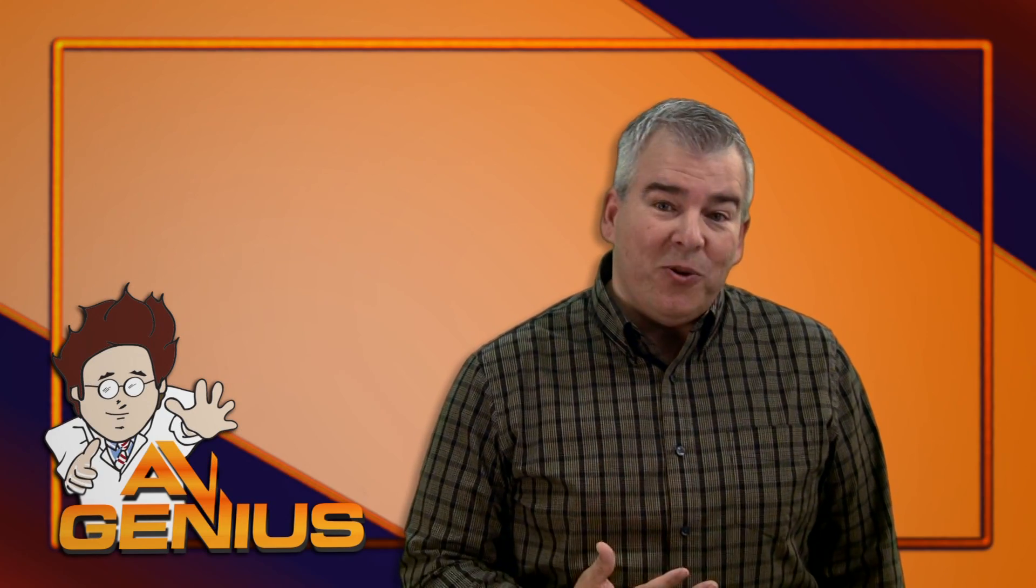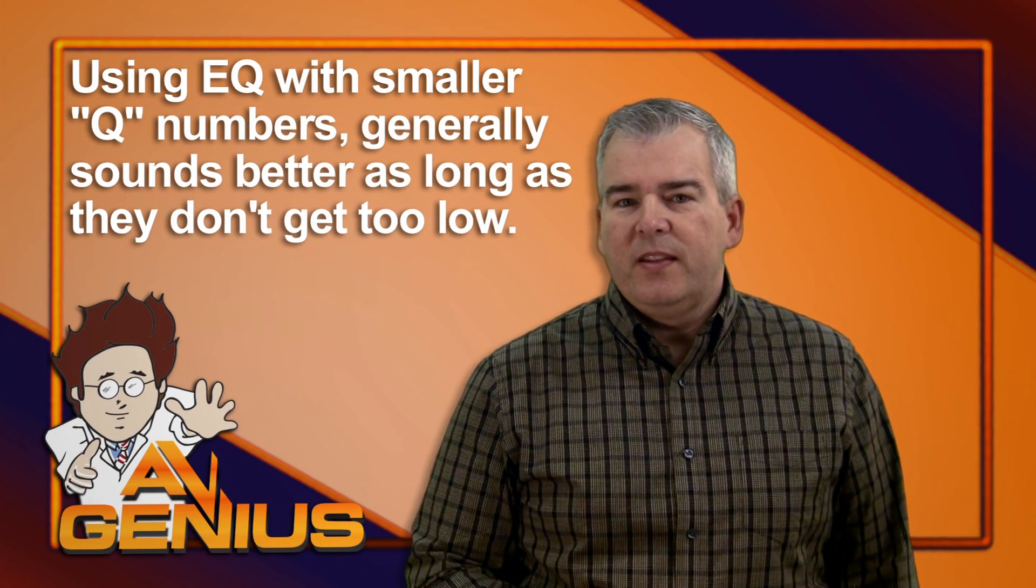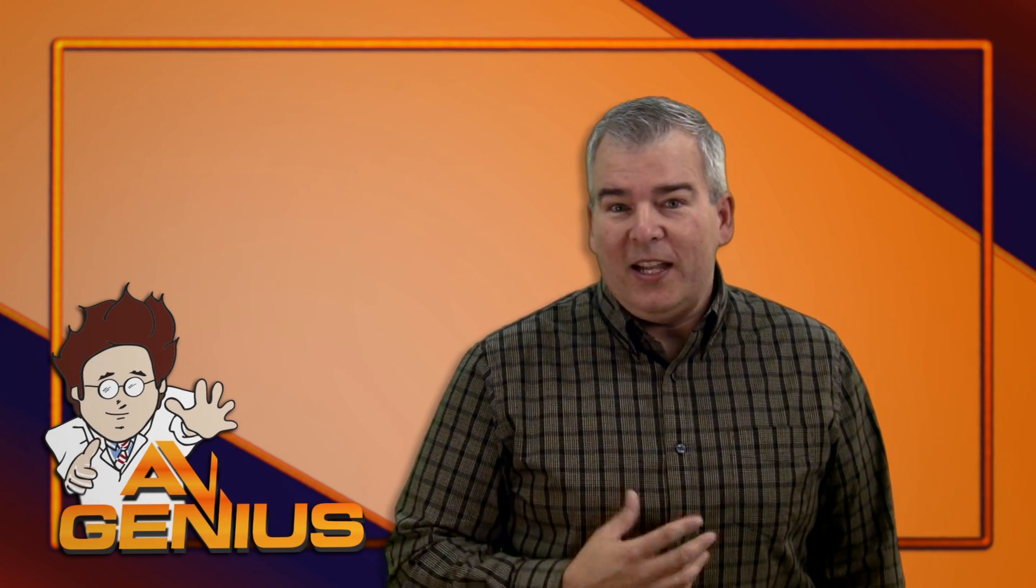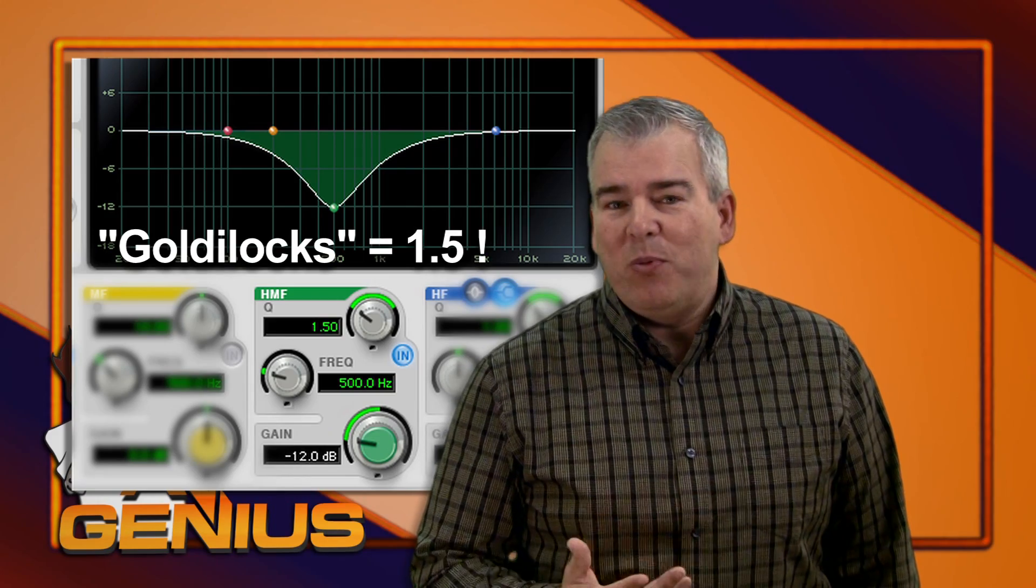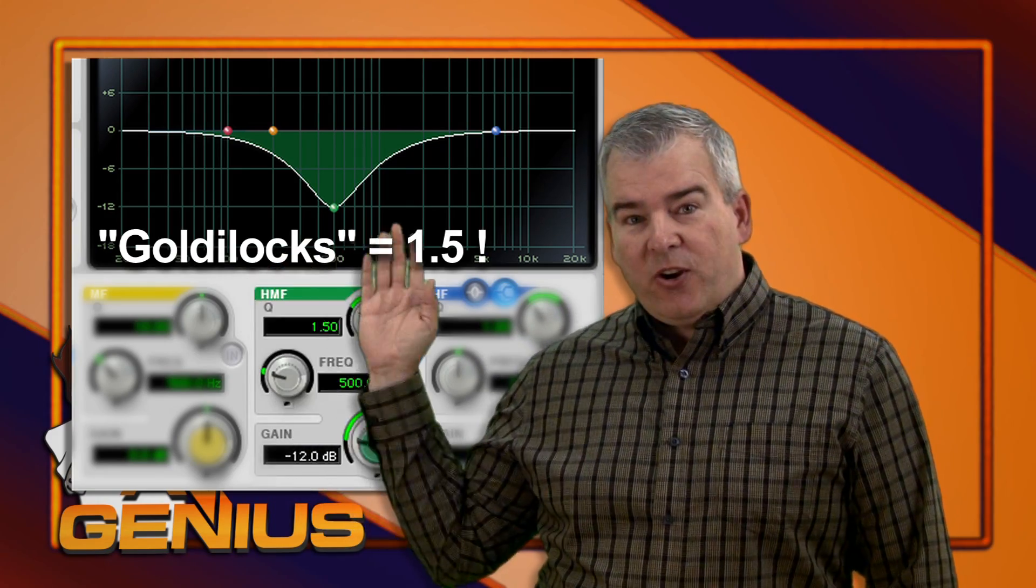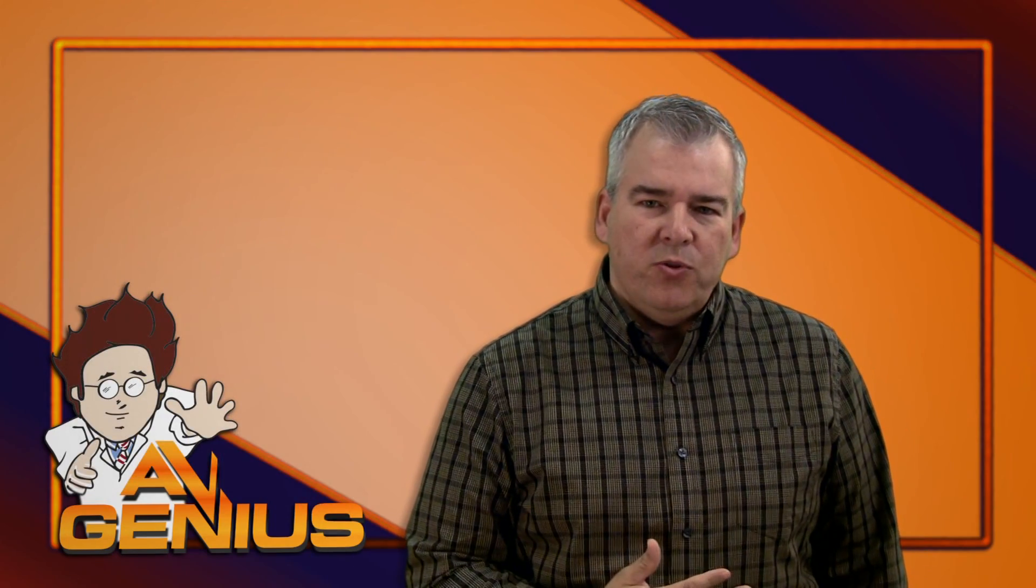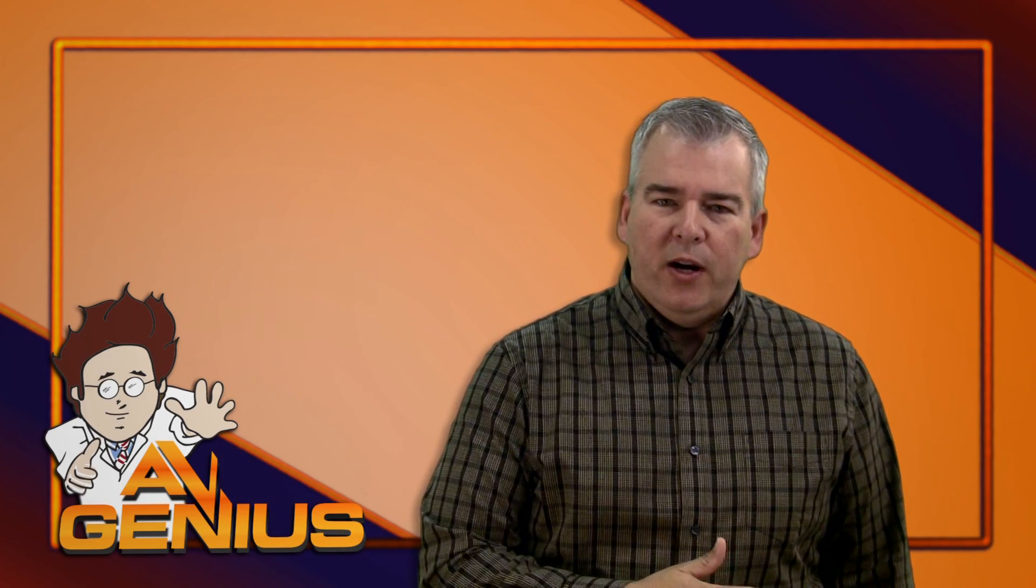But generally, larger bandwidths or smaller Q numbers sound better. I think the Goldilocks of Qs is around 1.5, which affects roughly a one-octave range centered on the chosen frequency. And the reasonable range of Qs is between 1.0 and 4.0.